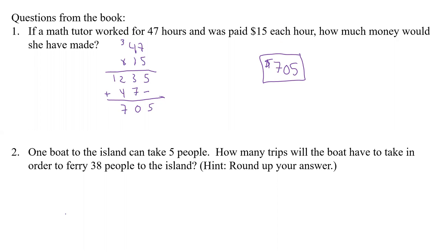All right, what about the next one? It says, one boat to the island can carry five people. It must be a small boat. How many trips will a boat have to take in order to ferry 38 people to the island? Hint, round up your answer. And so we're going to get an answer that's not a whole number, basically. And so we're going to round it up to the number of trips because you can't take a part of a trip. And so we want a whole number of trips. And so what are we going to do? Well, we're going to have to divide. So we have a total of 38 people and we can get 5 people per trip or per boat ride. And so what we're going to do is we're going to take 38 divided by 5 and that should give us the number of trips to do.